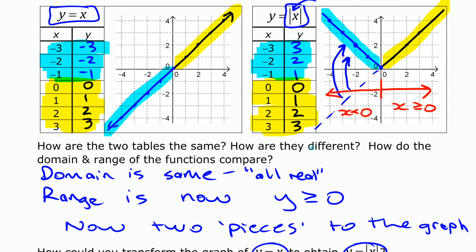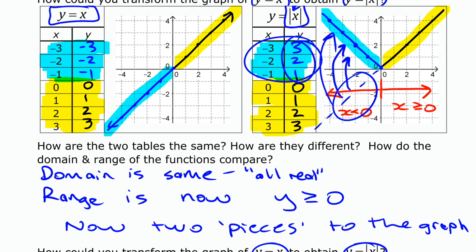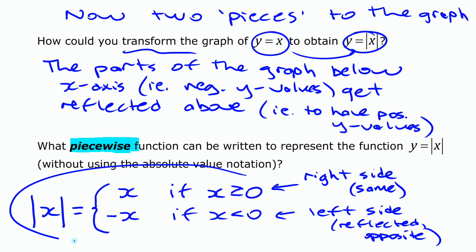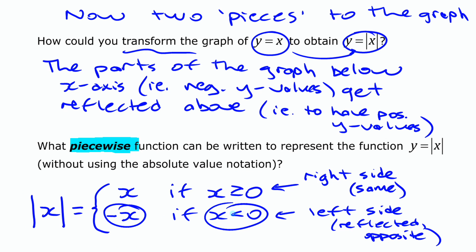All three representations show the same thing: anywhere you would have otherwise had negative values, they all become positive — whether it's on the graph reflecting, in the table switching signs, or in the algebraic expression where we switch the signs of anything that would have been negative. So that's a look at that basic absolute value function.